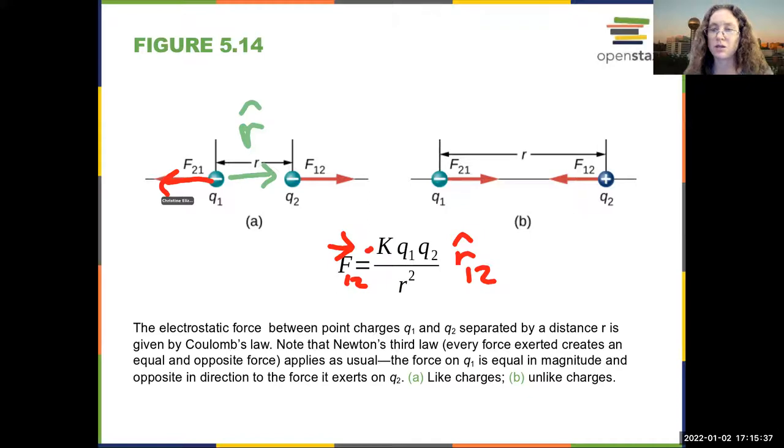And then you can switch the subscripts and talk about the force of two on one. And when you do that, if I am careful about my subscripts, this is the unit vector from one to two. The unit vector from two to one is in the opposite direction. I draw an arrow from two to one, and I again have a negative sign. I want to go in the opposite direction of that unit vector, and then I see that my net force is in this direction.